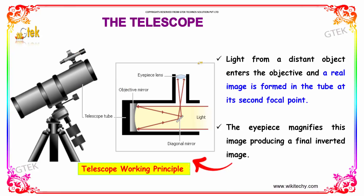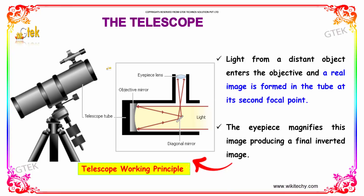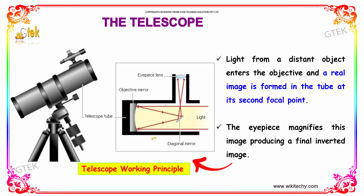Light from a distant object enters the objective and a real image is formed in the tube at its second focal point. The eyepiece then magnifies this image, producing a final inverted image. This is how a basic refracting telescope works.